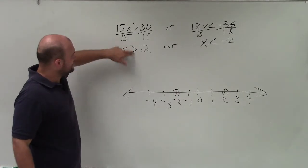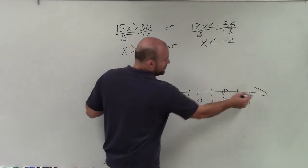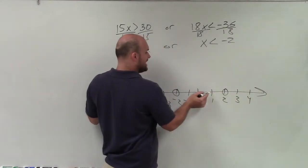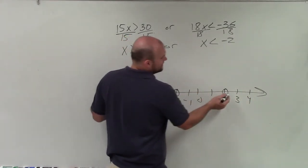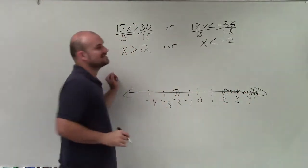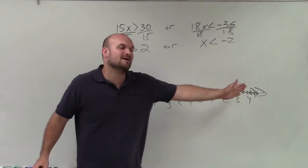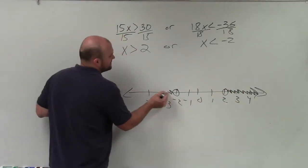This one says x is greater than 2. So that means all values that are greater than the number 2. Well, 3 and 4 obviously is greater than 2. And all the limits to the left are definitely smaller. So I'm going to shade this one to the right. And x is less than negative 2. Well, obviously, all the points to the right are greater than negative 2. So all the points to the left are less than.